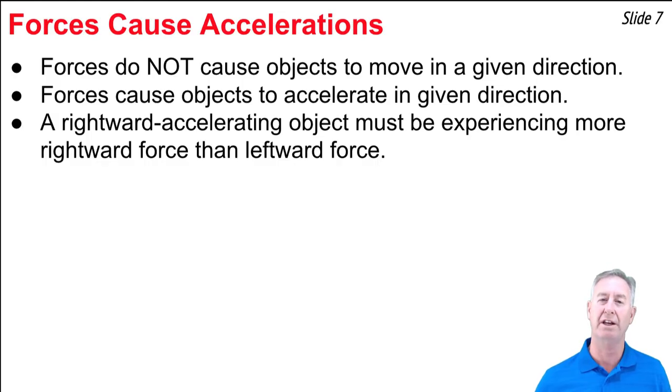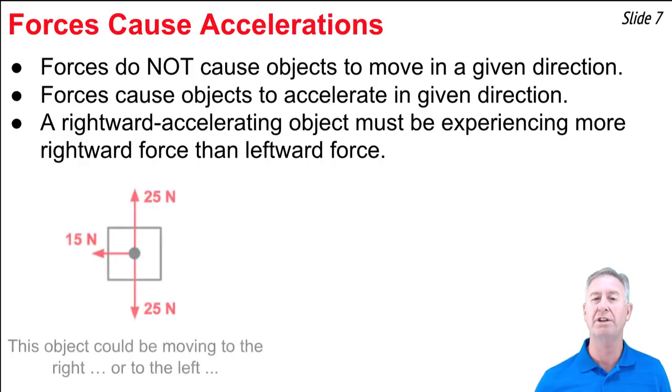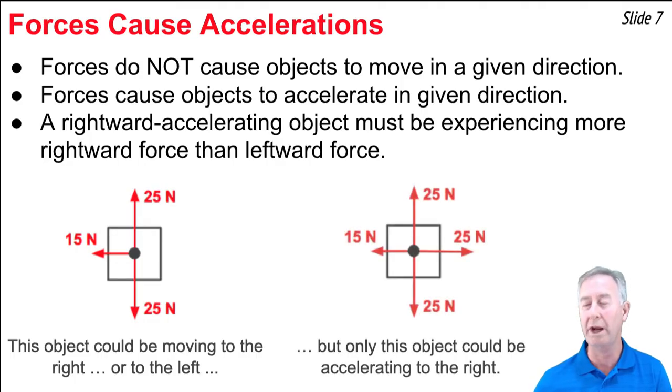A rightward accelerating object is an object that must have more rightward force than leftward force. But you can't say that a rightward moving object has more rightward force than leftward force. Like, for instance, if you look at this force diagram here, what you notice is there's no force to the right, but there's force to the left. This is an object that we know for certain is accelerating to the left, but it doesn't mean it's moving to the left. What it could mean is that it's moving to the right and slowing down. Here's another diagram with more rightward force than leftward force. This is an object that's definitely accelerating to the right, and it could be moving to the right as well, and if it were, it's speeding up. What forces do is change the way that objects move, but they don't determine the direction that an object moves.